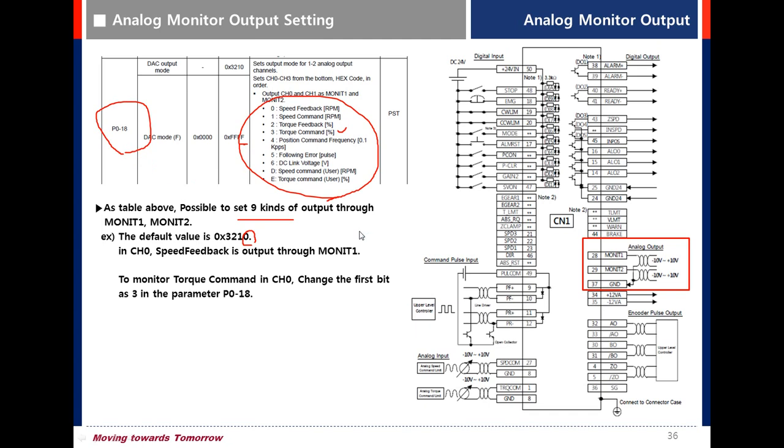For wiring, Monitor 1 is pin 28, Monitor 2 is pin 29, and GND is pin 37. The output voltage is minus 10 volts to plus 10 volts.